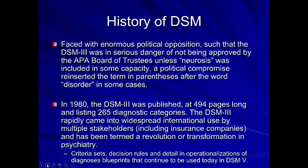There was a kind of argument between those who viewed the world psychodynamically and the behaviorists who were emerging in the 1950s and 60s. There was significant political opposition, and there was actual danger of the DSM-3 not getting approved by the APA Board of Trustees unless neurosis was included in some capacity. They reinserted the term in parentheses after the word 'disorder' in some cases. In 1980, the DSM-3 was published at 494 pages long, now four times as long as previous versions, with 265 diagnostic categories.